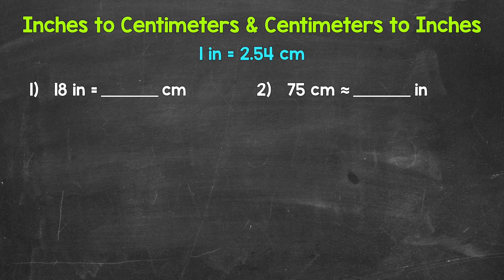Starting with number 1, where we have 18 inches equals how many centimeters? Well, each inch equals 2.54 centimeters. So we have 2.54 centimeters 18 times. So we need to do 18 times 2.54. And that's how we convert from inches to centimeters. We multiply by 2.54.